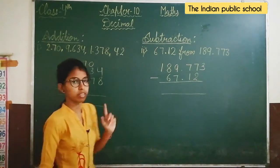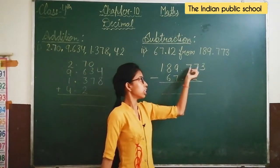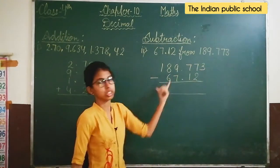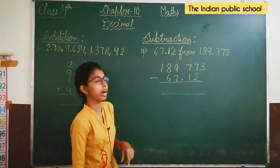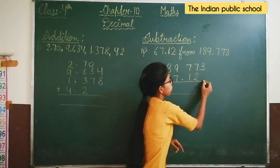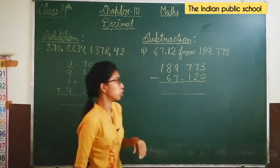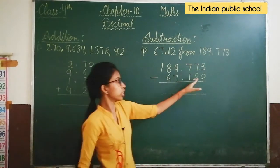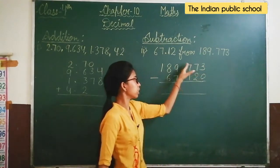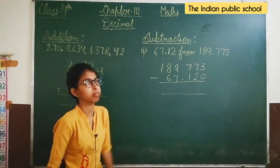Students, notice that after the decimal there are 3 digits in one part and 2 digits in another part. You will balance them by putting a zero after the given number. So this gives us the balanced number. We will subtract them now.